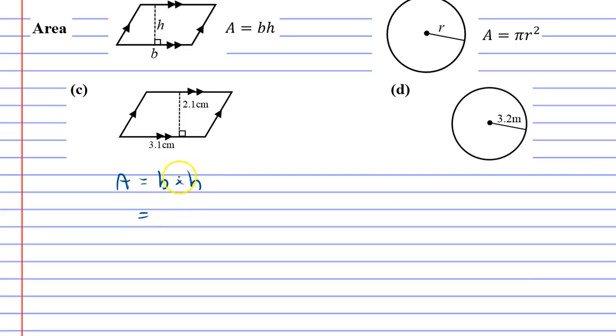Our base is 3.1 and our height is 2.1, so what do we get? To one decimal place, it's 6.5 centimeters squared. Parallelograms are nice and simple. Circles are a little harder.